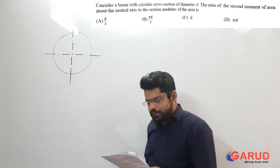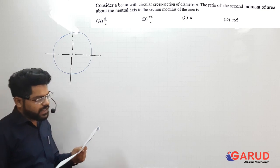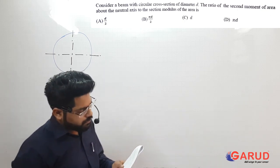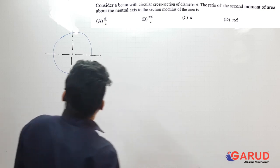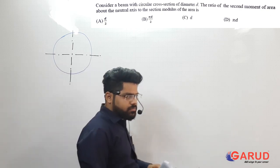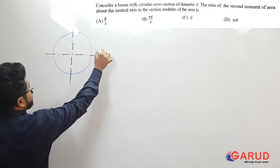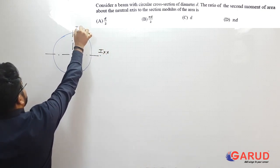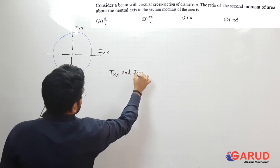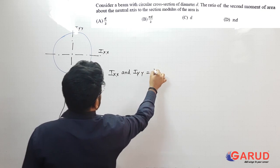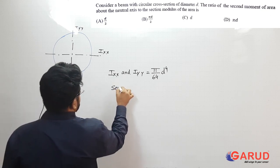A very simple sum. Consider a beam with a circular cross section of diameter D. Find the ratio of the second moment of area about the neutral axis to the section modulus of the area. This is a one-mark question. The second moment of area is nothing but the moment of inertia about the neutral axis.